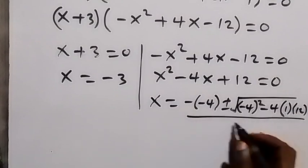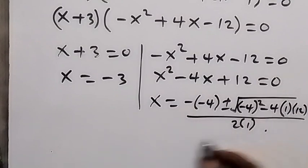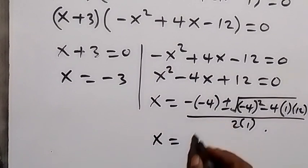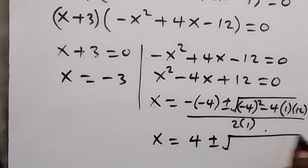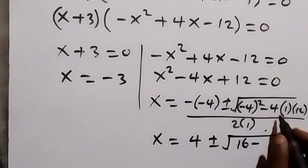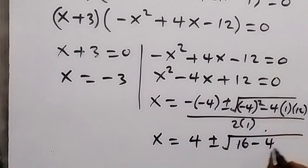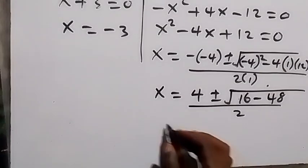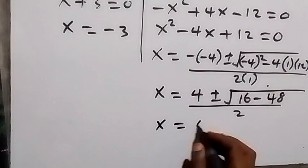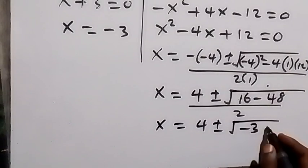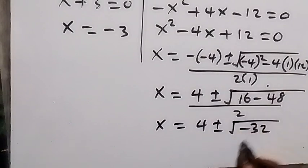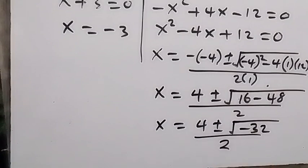From here we have x equals 4 — that's minus times minus 4 — plus or minus square root of minus 4 squared, that's 16, then minus 4ac which is 48, all over 2. When we simplify this, it gives us x equals 4 plus or minus square root of 16 minus 48, which is minus 32, all over 2.